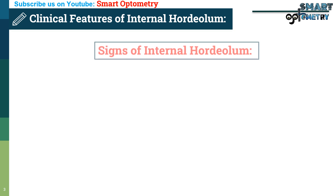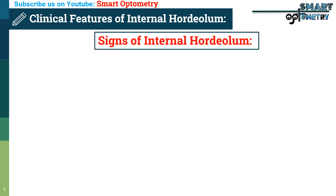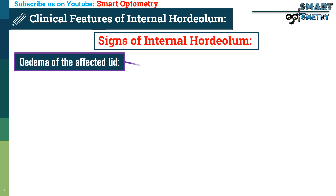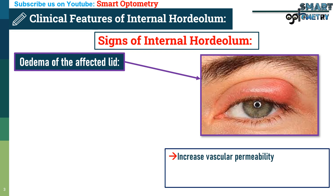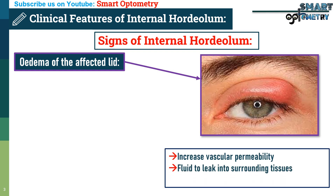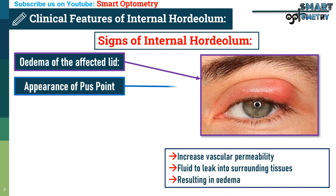Signs of internal hordeolum. 1. Edema of the affected lid — inflammatory mediators increase vascular permeability, allowing fluid to leak into surrounding tissues, resulting in edema.